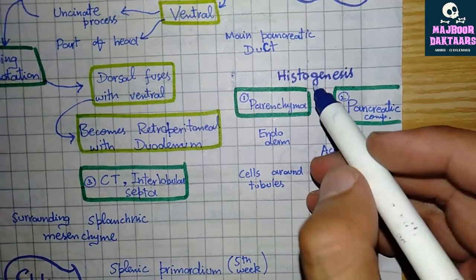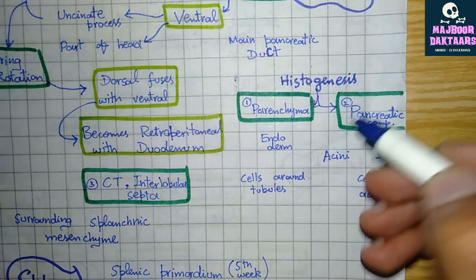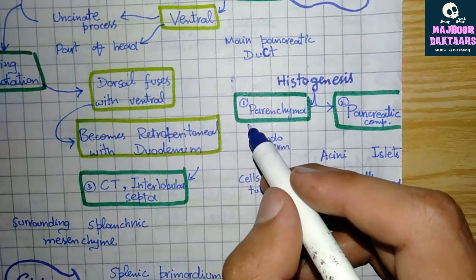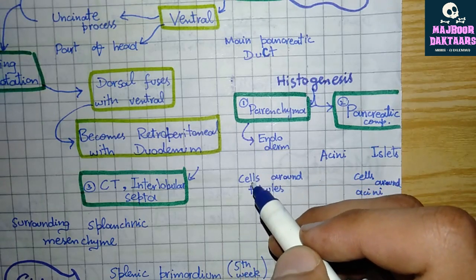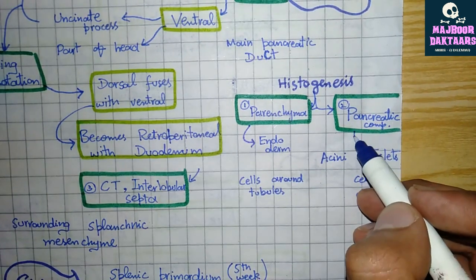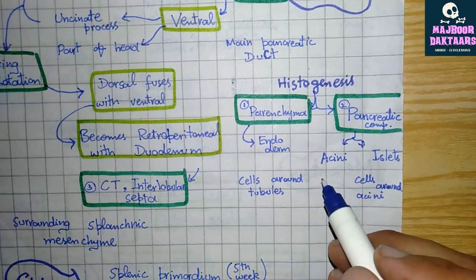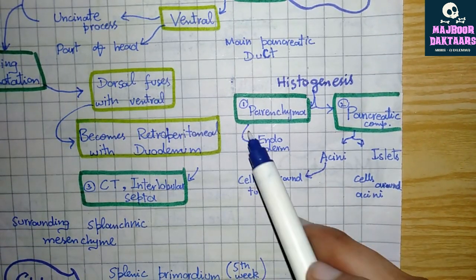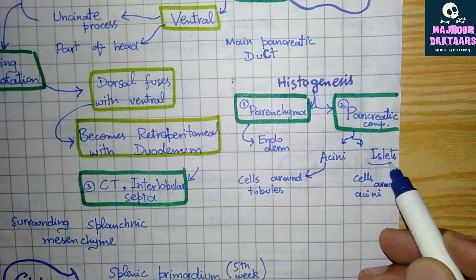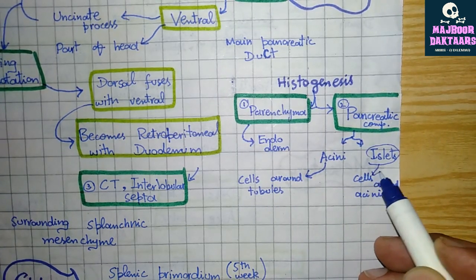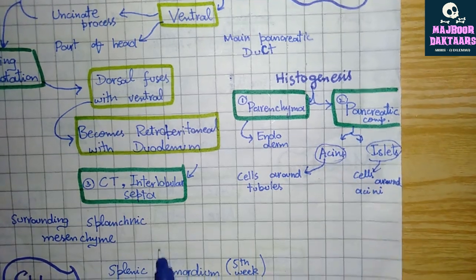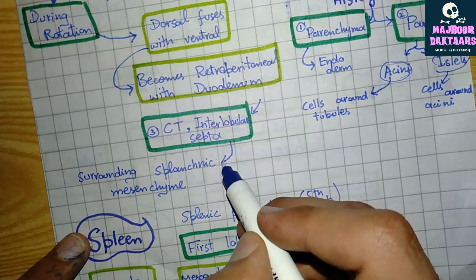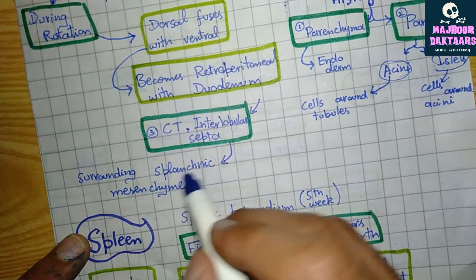Histogenesis of the pancreas: the parenchyma develops from the endoderm of the pancreatic bud. Pancreatic components include acini and islets — the acini develop from cells surrounding tubules formed from the endoderm, while the islets are formed from cells surrounding the acini. The connective tissue and interlobar septa of the pancreas develop from the surrounding splanchnic mesenchyme.